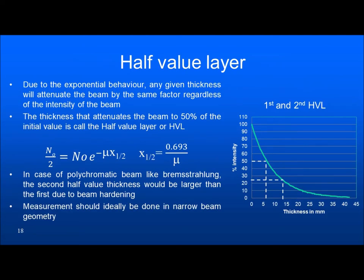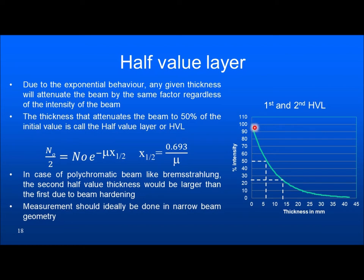The next important factor is the half value layer (HVL). Due to the exponential behavior, any given thickness will attenuate the beam by the same factor regardless of intensity. The half value layer — or half value thickness — is the thickness that attenuates the beam to 50% of its initial value. For example, here you can see that 6 mm thickness attenuates from 100 to 50 — that is the half value layer.